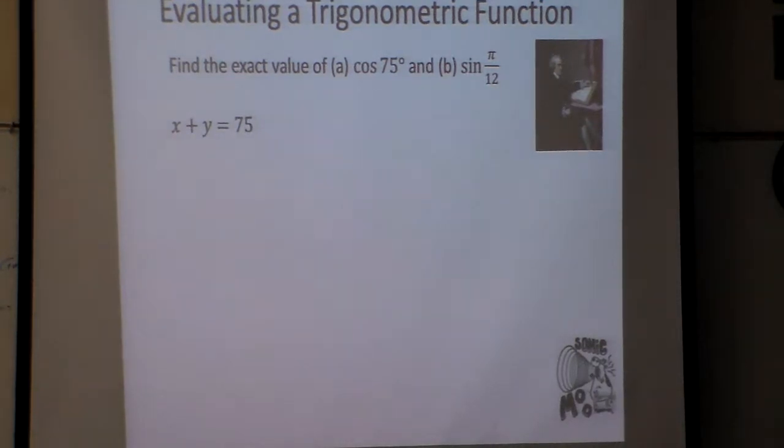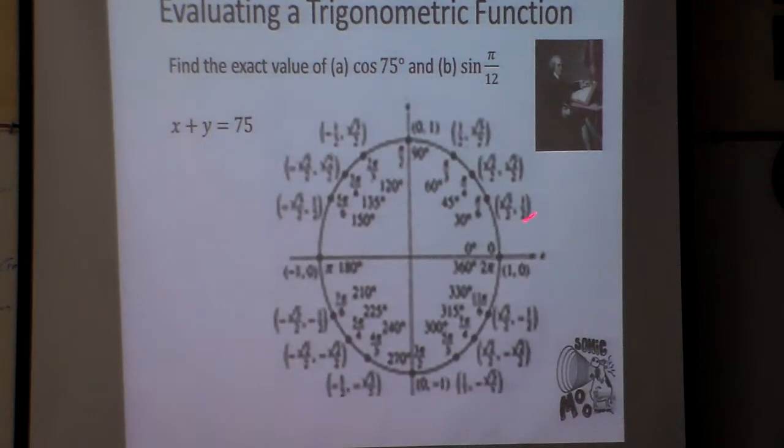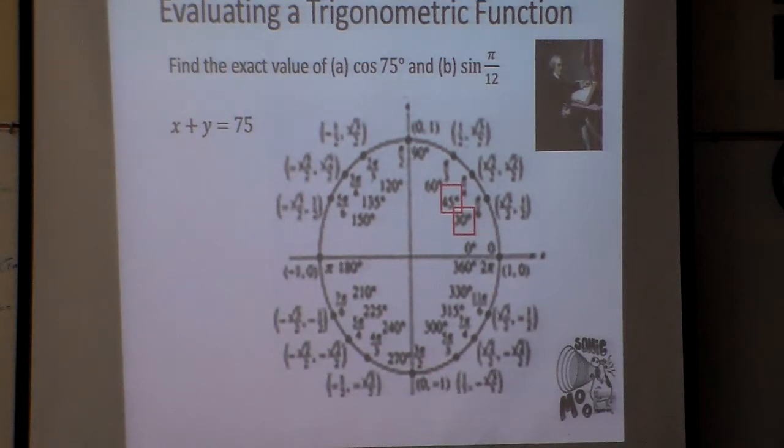The first thing I'm going to look at is x plus y equals 75. I need two numbers that add to make 75, and I want to use numbers from my unit circle. Looking over here, I'm going to use 45 and 30, because those will be values. If I use the unit circle, then I have my cosine value and my sine values at those angles at 45° and 30°.